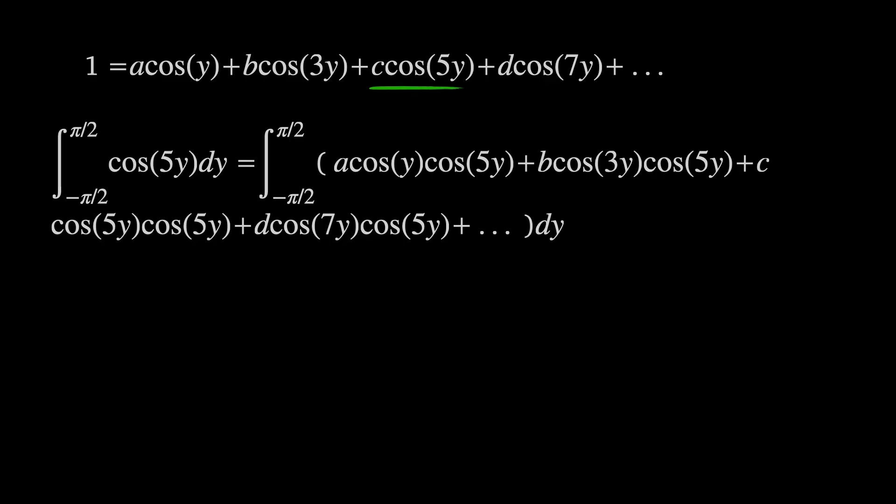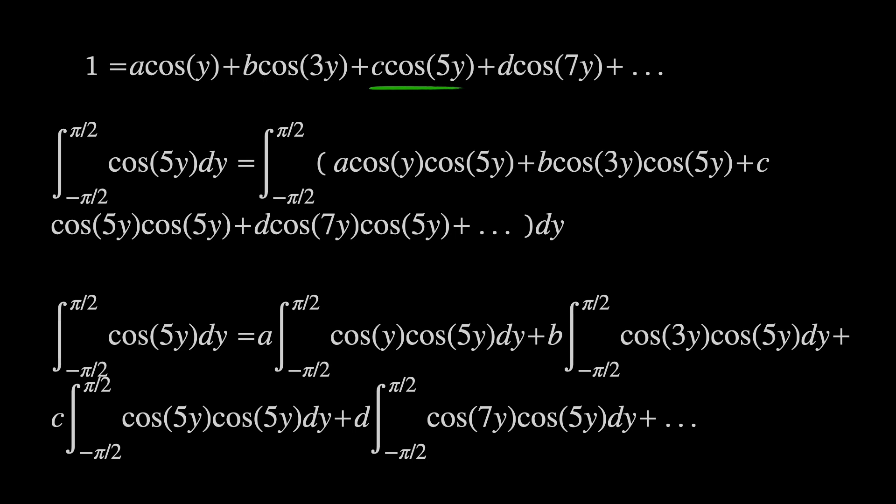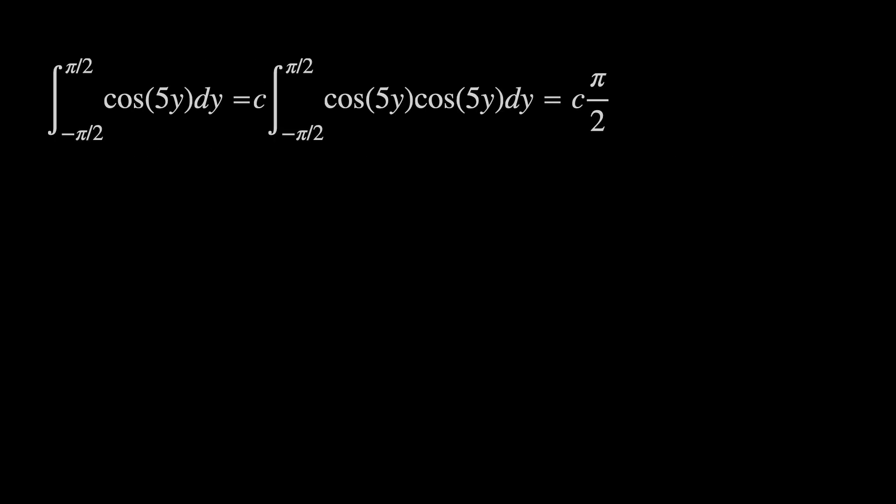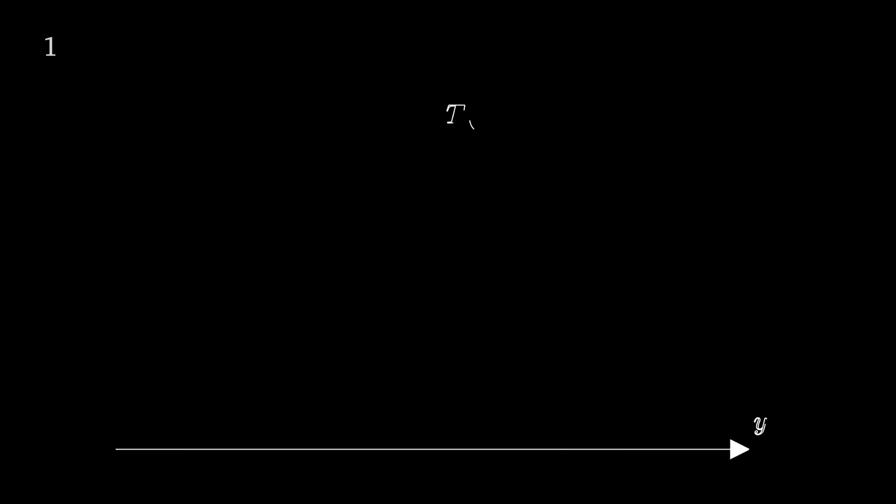Using the laws of integration we can distribute the integral. Now all of the integrals with different cosines we know will be 0. This leaves only the one we're interested in and we know the right hand side integral is π over 2 from our product rule already. The left hand integral we can work out to give 2 over 5 and this means that c is equal to 4 over 5π. Working out the other coefficients gives an expression for 1 in the form of an infinite trigonometric series.